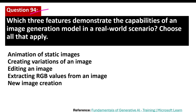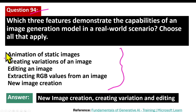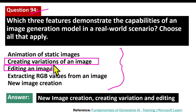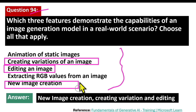Question number 94. Which three features demonstrate the capabilities of an image generation model in a real-world scenario? The correct answers are: creating variations of an image, editing an image, and new image creation. Image generation models can take a prompt, a base image, or both, and create something totally new. These generative AI models can create both realistic and artistic images, change the layout or style of an image, and create variations of a provided image.